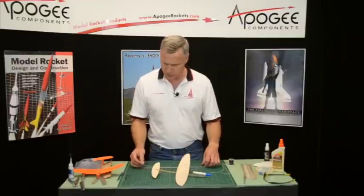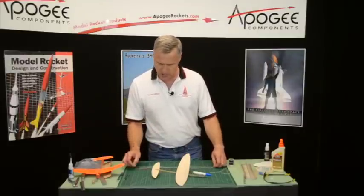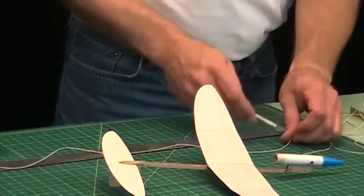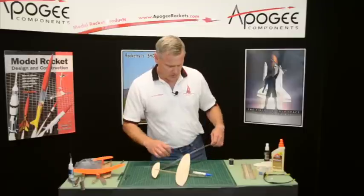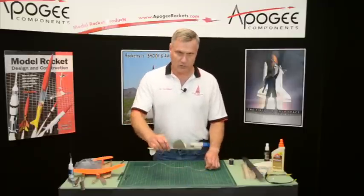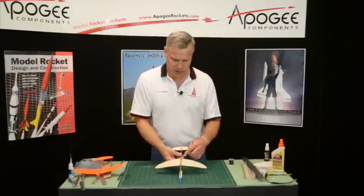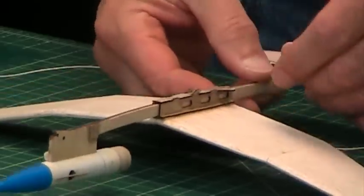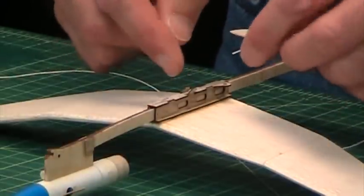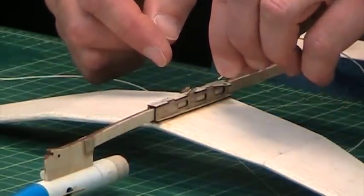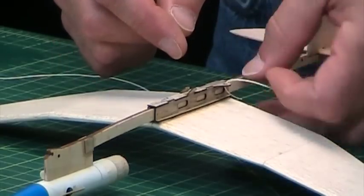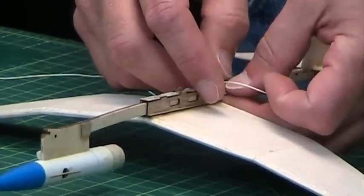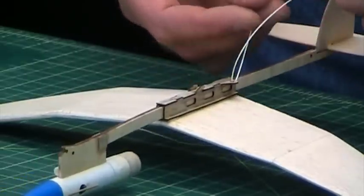So I got a ruler here and I'll just cut an 18 inch piece. Then flip your glider over, and on the back side of the wing is a hole in the slide box. Thread your thread through that hole and I like to start with a little slip knot.